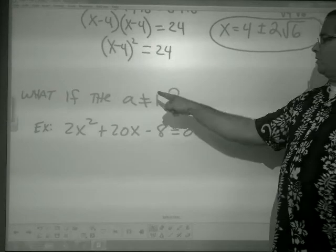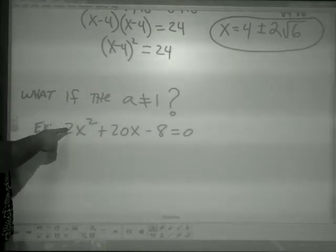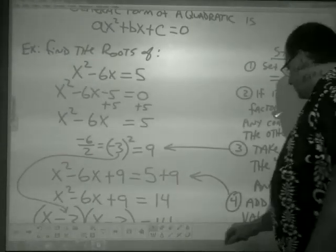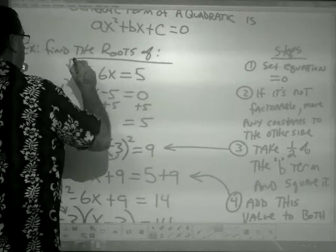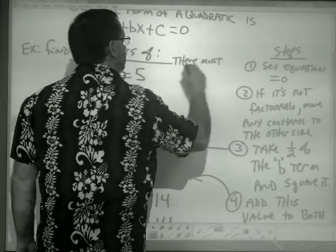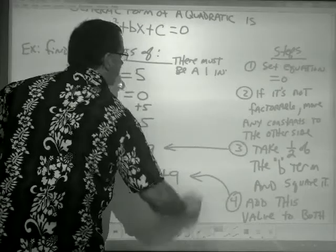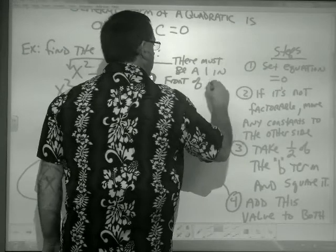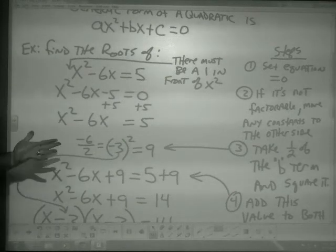One last important thing: what if the a value is not equal to 1? There must be a 1 in front of x squared — in other words, the a value has to equal 1, or else you cannot complete the square.